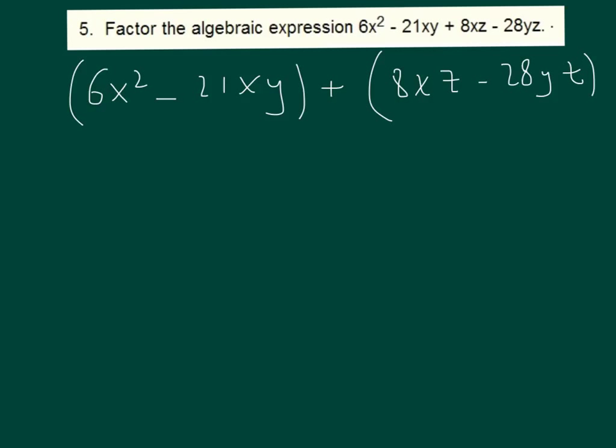So let's split the given expression into the sum of two expressions and start factoring each one of them. In the first expression, six is three times two, and then X squared can be written as X times X, minus 21 is three times seven, and then X and then Y.